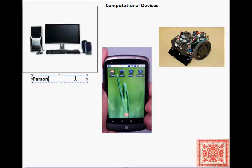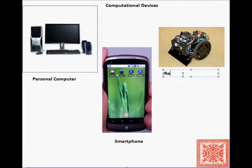So, these are some examples of computational devices. You have a personal computer, then this is a smartphone, Google Nexus One, and then we have Junoon Mark III, a robot. These are all computational devices. There are multiple computational devices out there, and they are different.